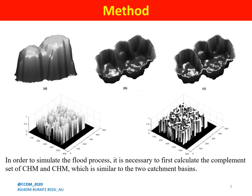Figure A shows a CHM. To simulate the processing of flooding, we first calculated the complement of the CHM as figure B, which resembles two catchment basins. Assume that each basin has a hole punctured at its minimum, then we immerse it gradually into water and the catchment basins will be flooded. This algorithm automatically builds dams along the divide line to prevent water from neighboring catchment basins from merging, as shown in figure C. The constructed boundaries are called watershed lines and will be used as partition traces.